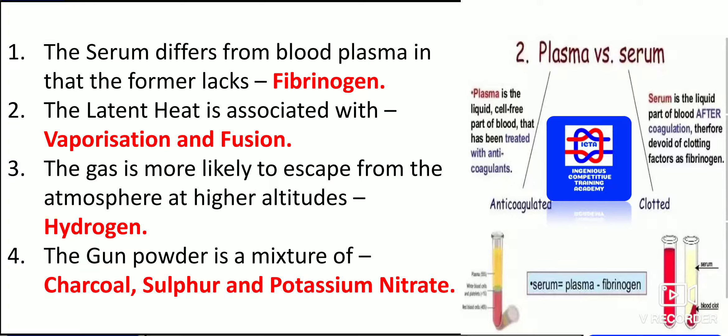The serum differs from blood plasma in that the former lacks fibrinogen. Serum is the liquid part of the blood after coagulation, therefore devoid of clotting factors such as fibrinogen. Plasma is the liquid cell-free part of blood that has been treated with anticoagulants — this is one major difference.